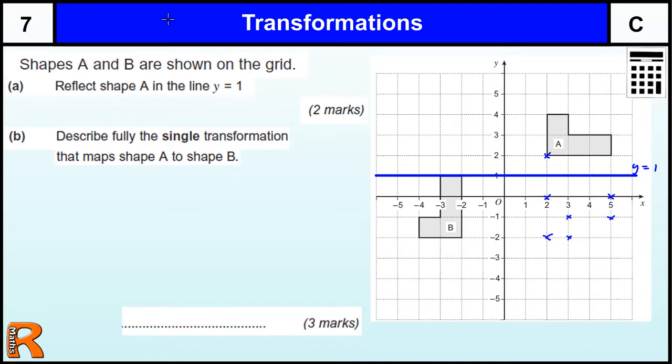Let's just use a different colour. Ok, so just a quick roughed out outline. It will give us that shape there. And I think it is quite clear that that is the reflection of A in y equals 1.